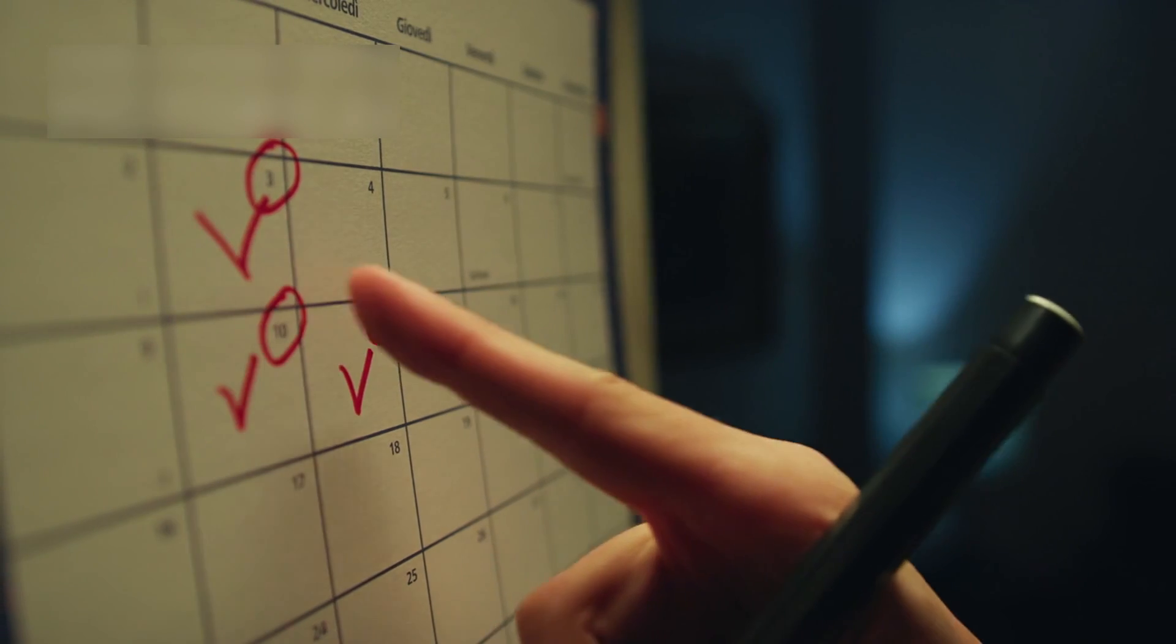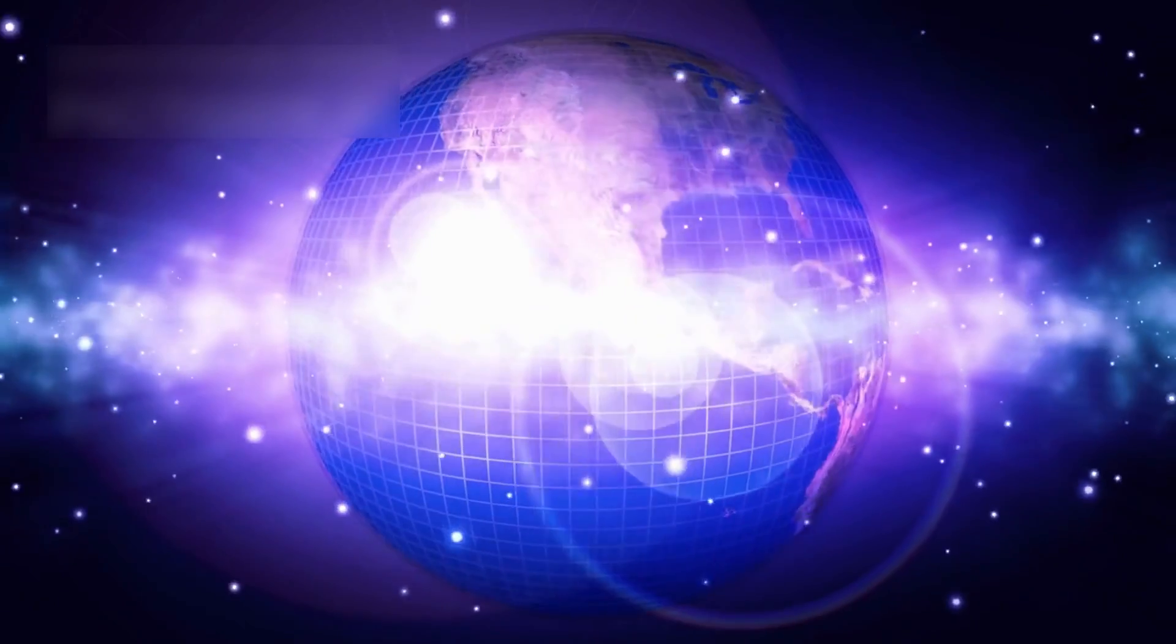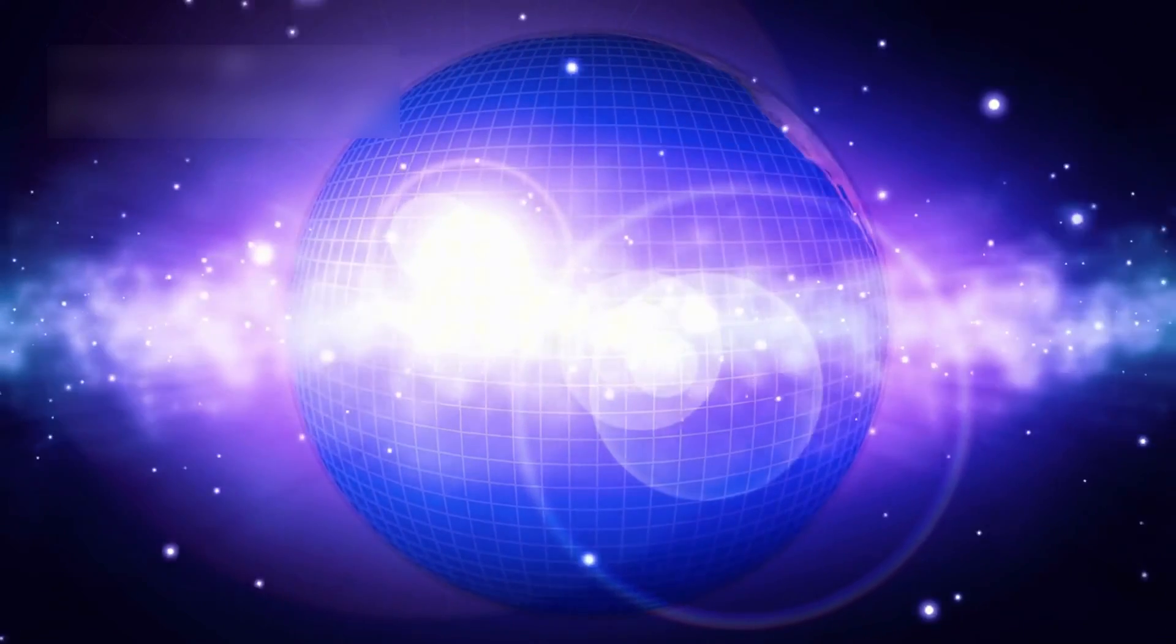To imagine this, think of the universe's history as a single year. The Big Bang happens on January 1st. Earth doesn't appear until December 31st. And human history only lasts a few seconds before midnight.